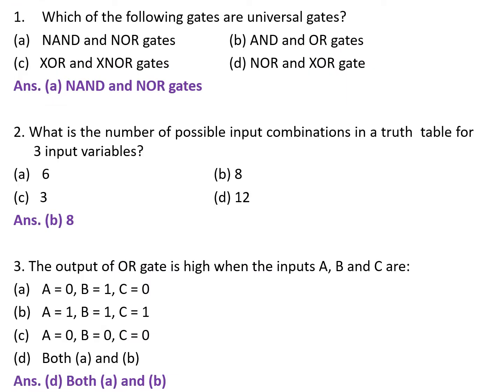The very first question is: which of the following gates are universal gates? A. NAND and NOR gates. B. AND and OR gates. C. XOR and XNOR gates. D. NOR and XOR gates. The correct answer is A — NAND and NOR gates.